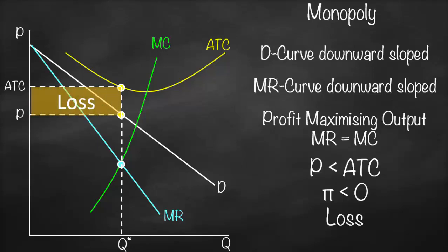Since price is below average total cost, profit is below zero — meaning we make a loss. Why would a monopoly make a loss if it's the only producer? The simple answer is sometimes there is weak demand or no demand. For example, anyone can publish a book, but if it's not of interest to many people, the cost of producing it exceeds the revenue generated. Even though it's your intellectual copyright — making you a monopoly — if not many people buy your book, you still make a loss.